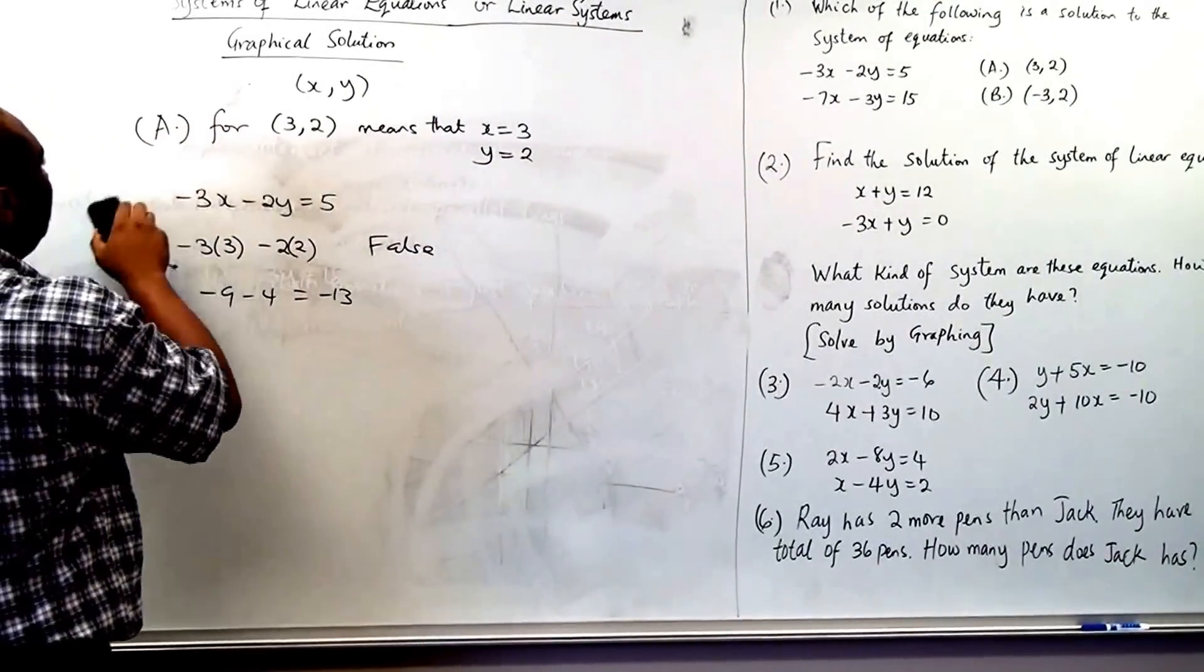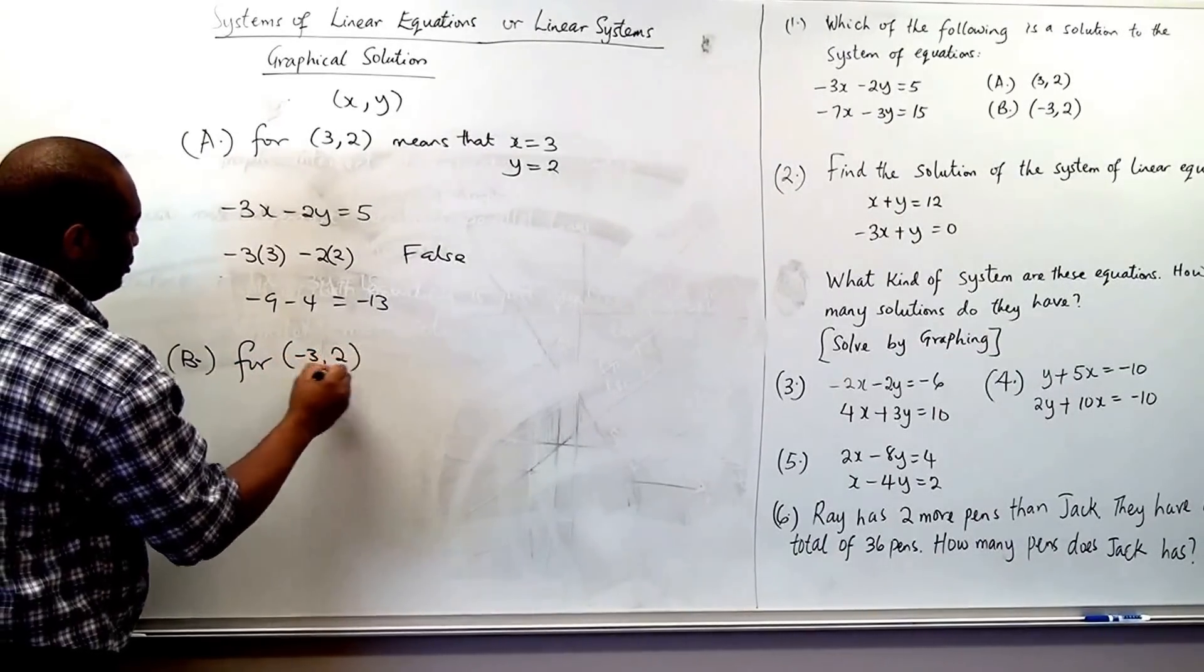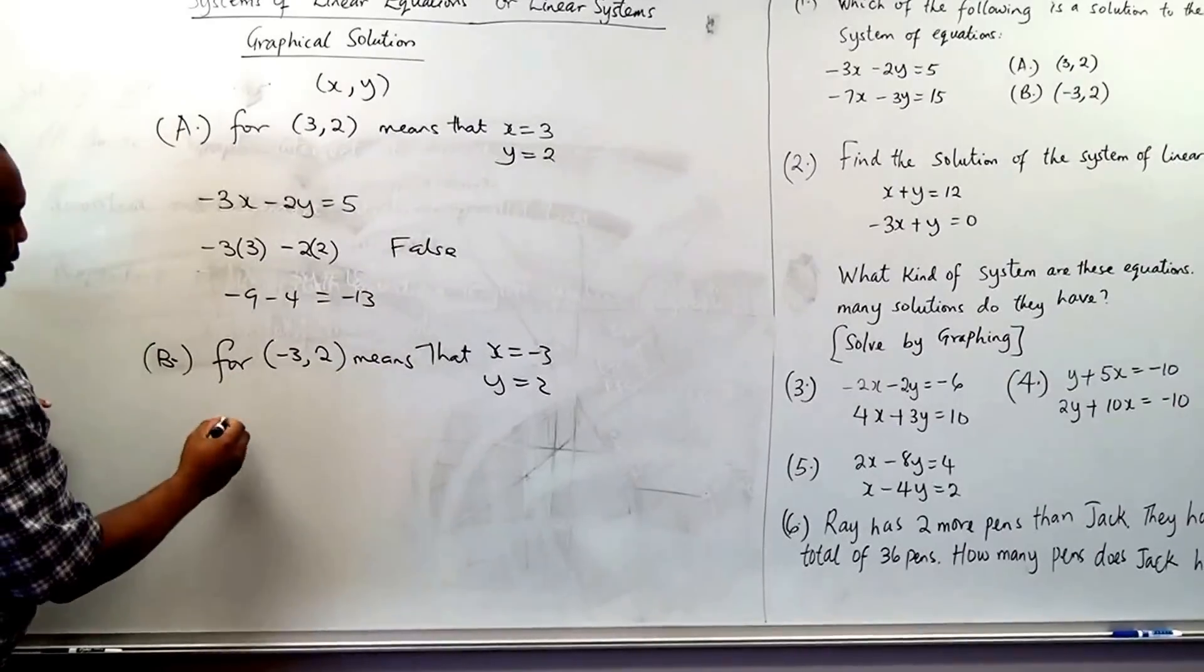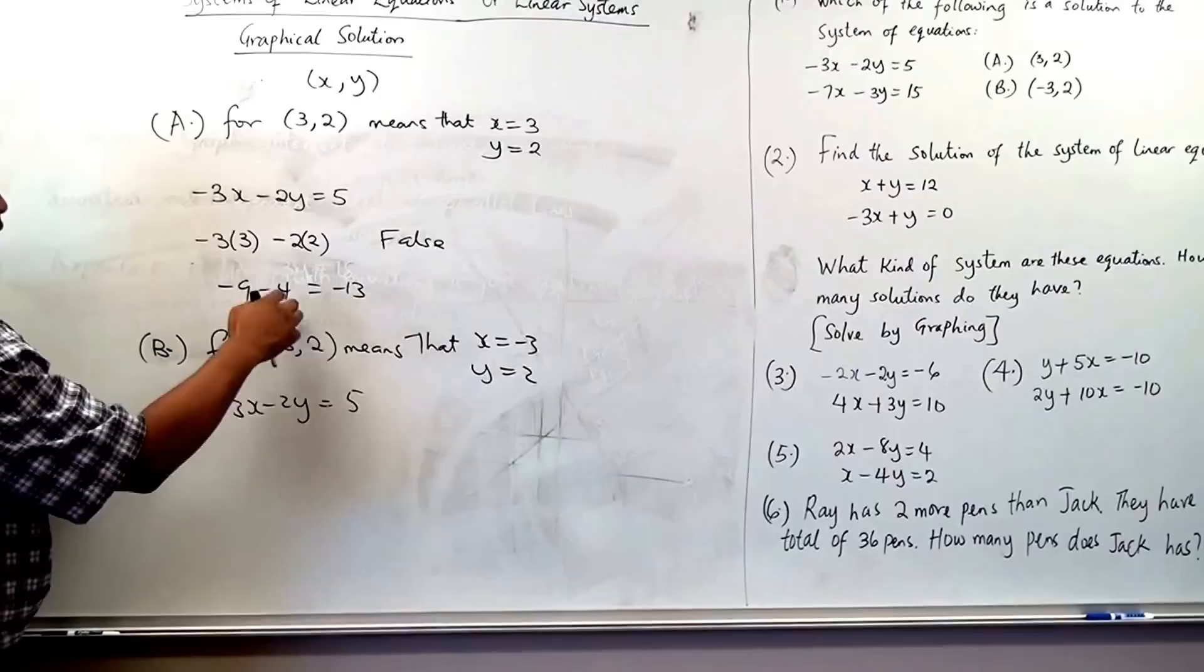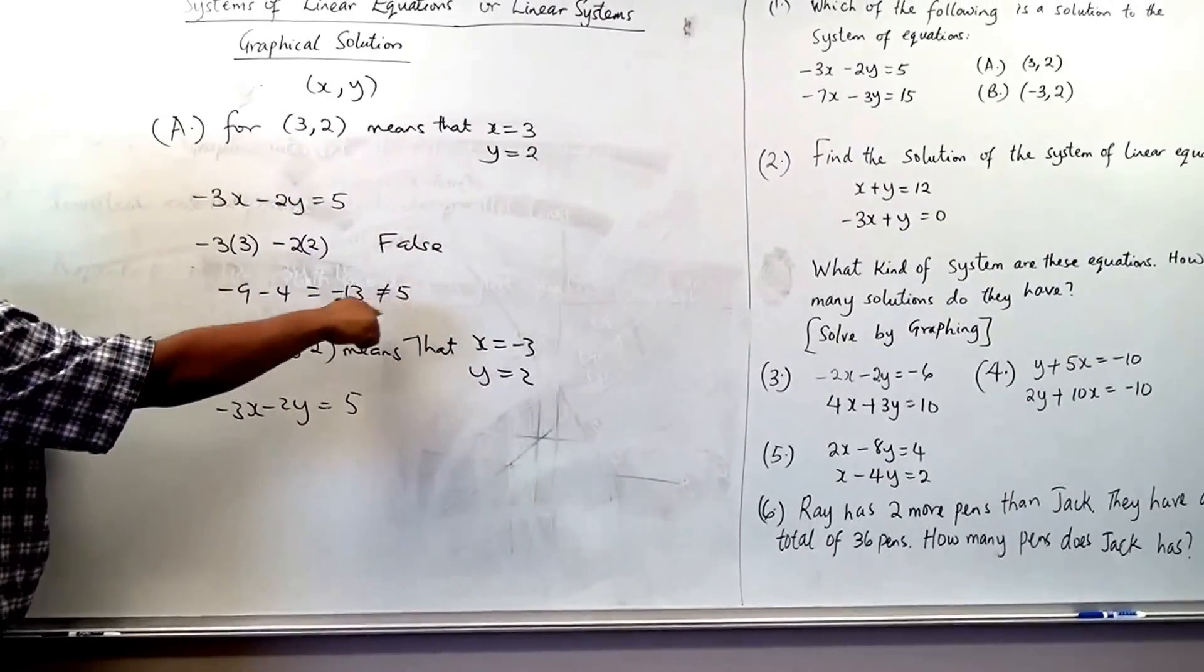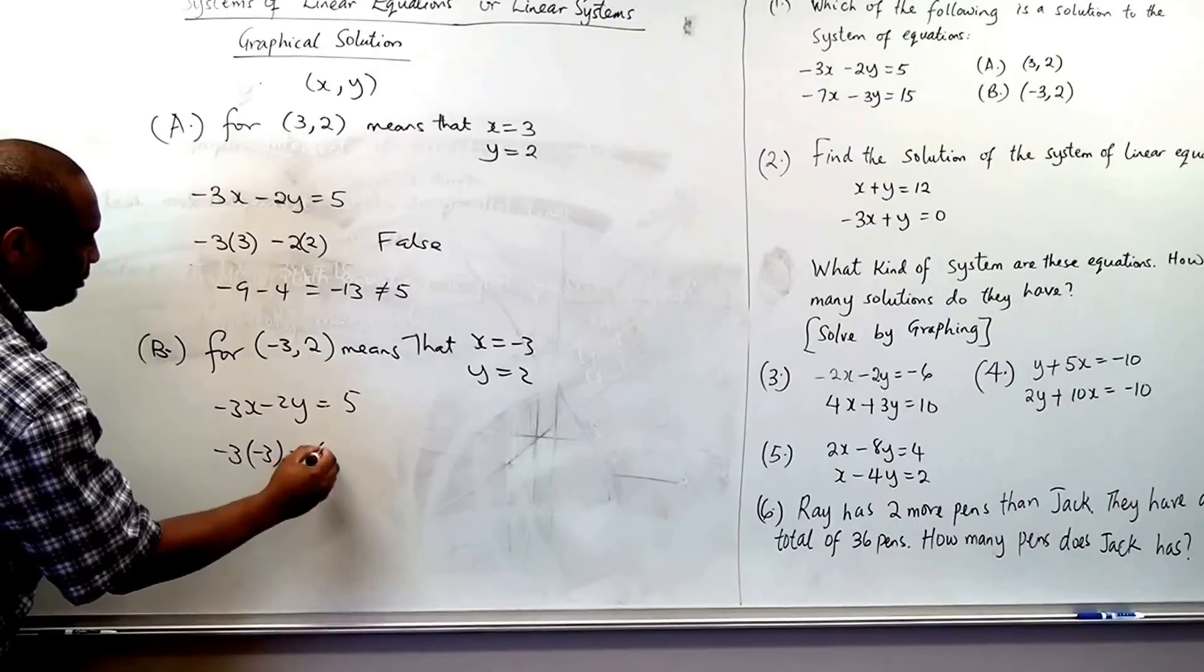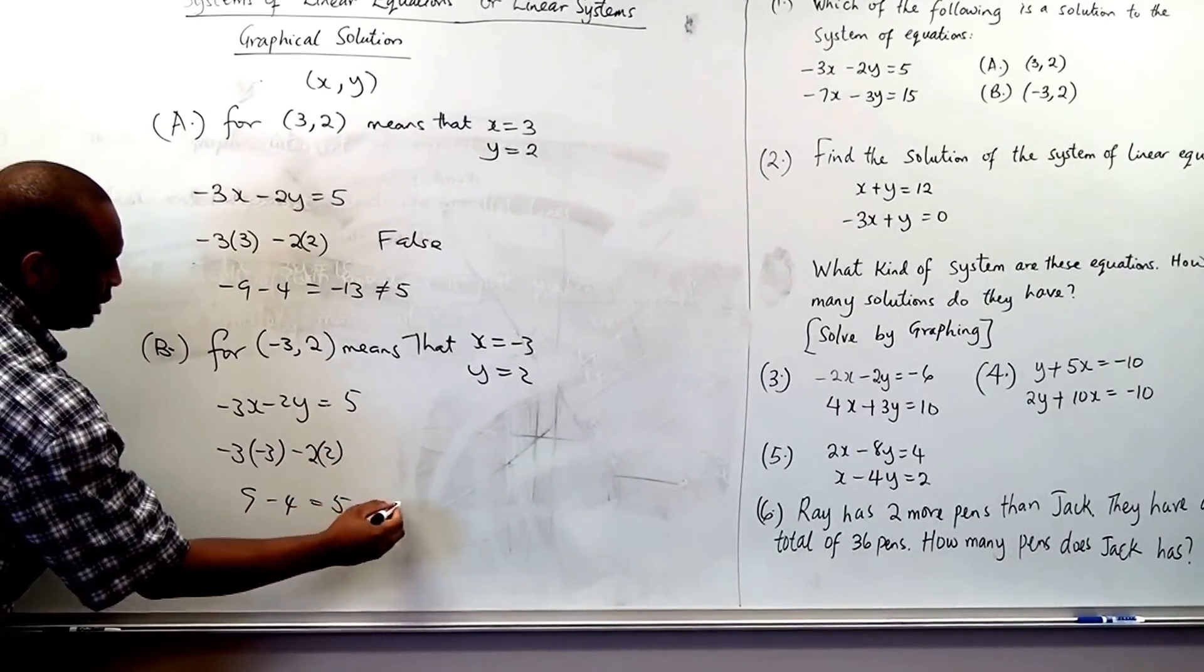So let's now do B part B for negative 3 and 2. It means that x is negative 3 and y is 2. So we tried the first one, negative 3x minus 2y to be 5. Now negative 3x minus 2y to be 5. We plug it in negative 3 times negative 3 minus 2 times 2. So this is 9 minus 4 and it's 5. So this is true.